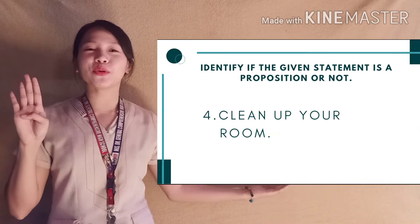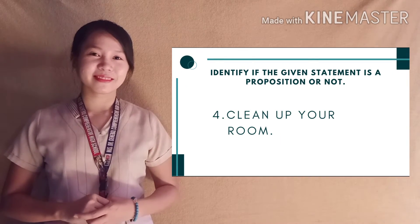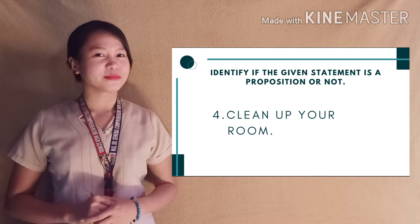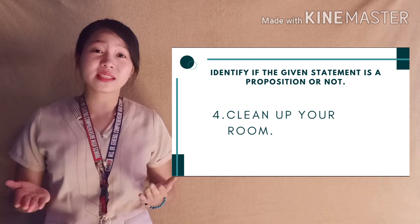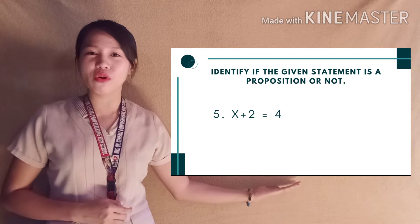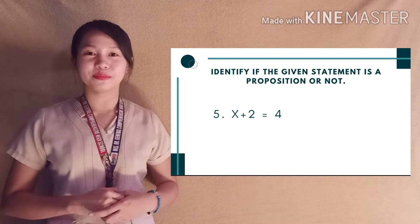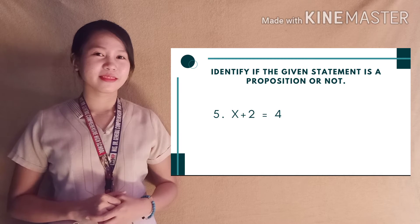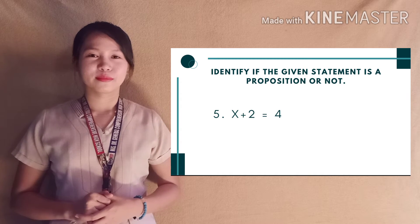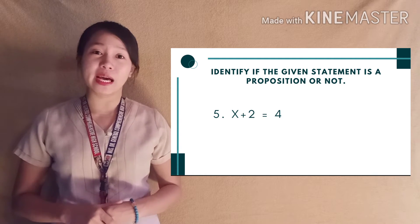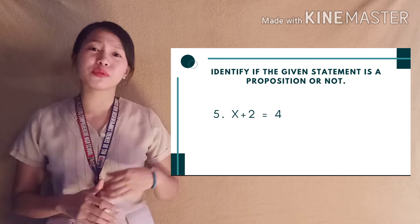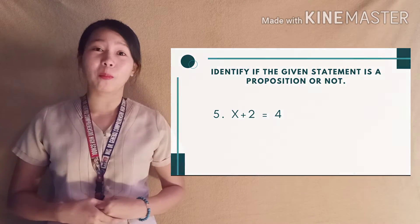Number 4: Clean up your room. Is it a proposition? It is not, because it is an imperative sentence. And lastly, number 5: x plus 2 is equal to 4. Is it a proposition? It is true if x is equal to 2, and false for other values of x. So if it is sometimes true and sometimes false, then it is not a proposition.